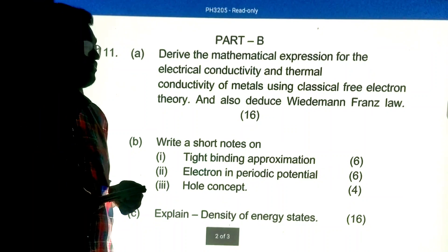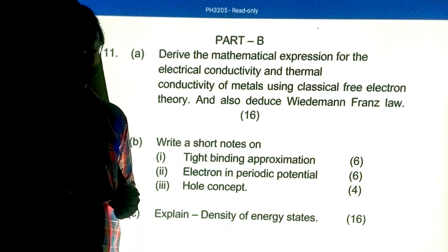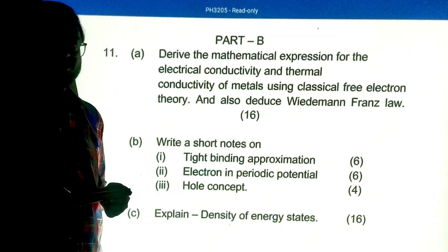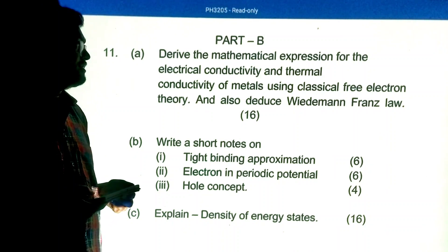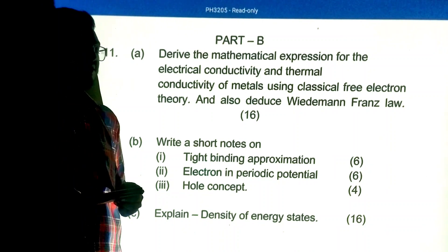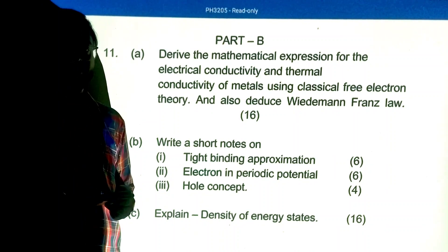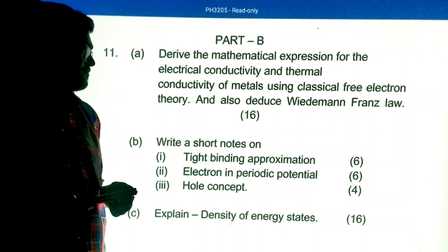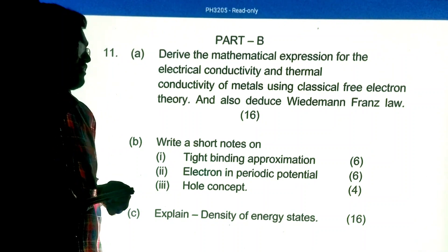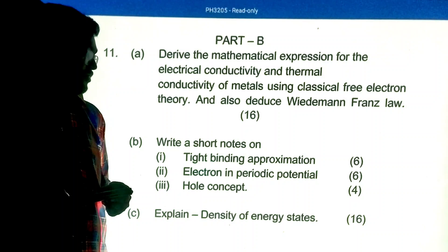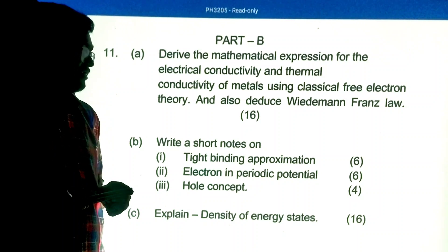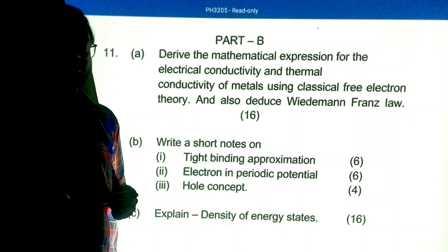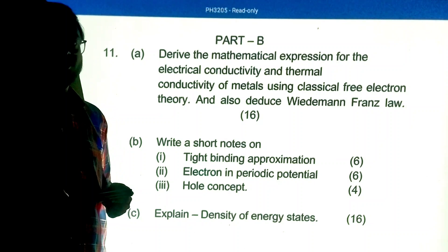Part B, Unit 1 important questions: Derive the mathematical expression for electrical conductivity and thermal conductivity of metals using classical free electron theory, and also deduce the Wiedemann-Franz law. Write a short note on tight binding approximation, electron in periodic potential, and the hole concept. Explain density of energy states.